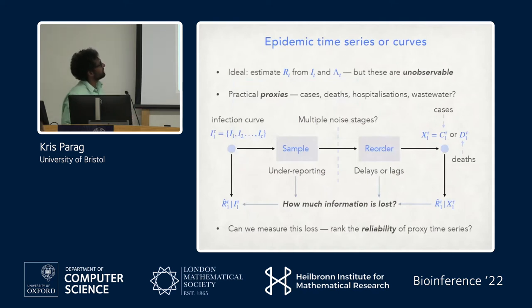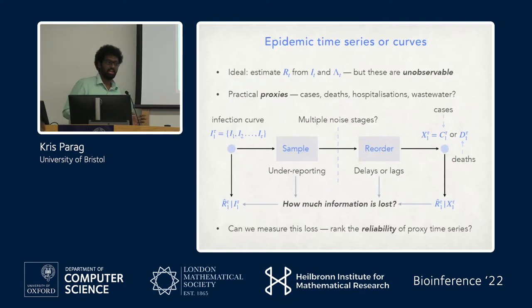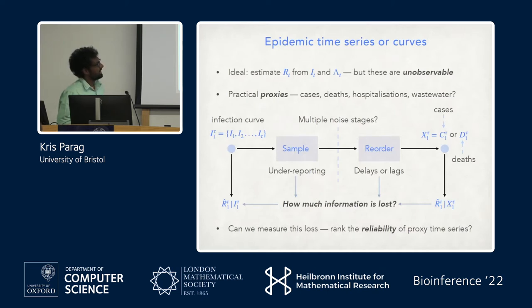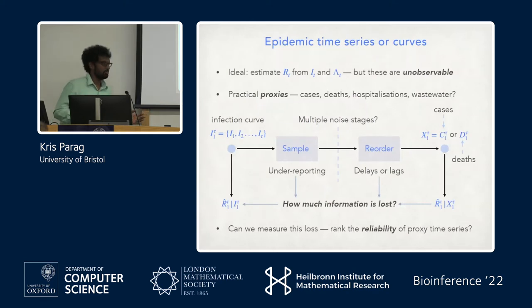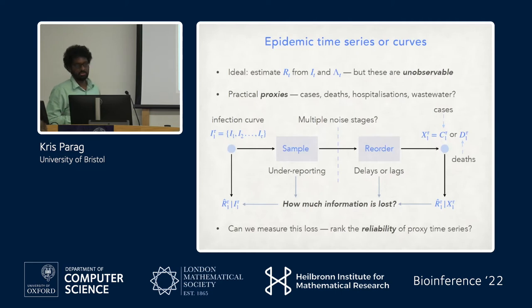The key question is very simple: R(t), I(t), and lambda(t) we just can't observe, or it's very hard to know the timing of when an infection actually occurs. So we have to use some practical measure — a time series of cases, deaths, or even viral abundances in wastewater. We could ask: given the infections across time, what estimate of R can we get?